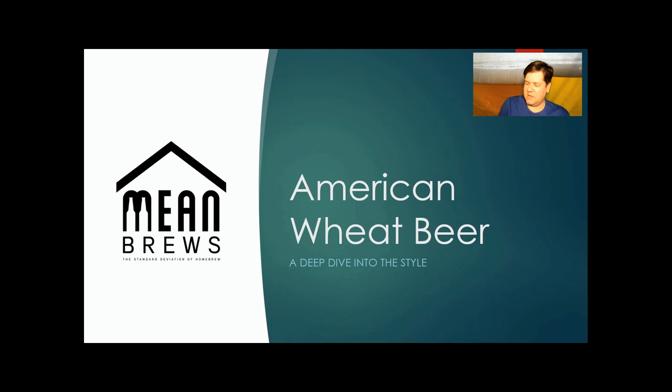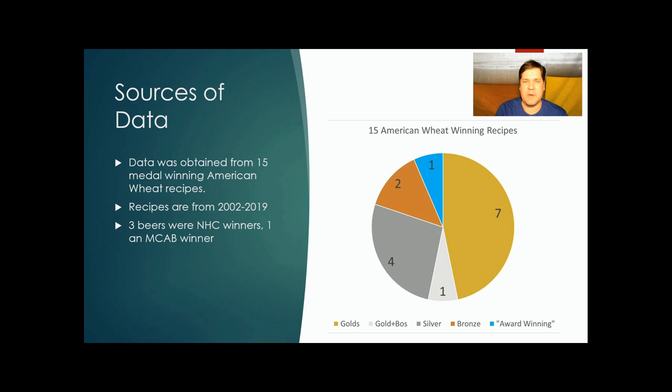The number of recipes we had for American wheat beer was only 15 recipes. The dates ranged from 2002 to 2019. Three of the beers were NHC winners, and we had one MCAB winner, Master Championship of American Brewers. More than 50% of the beers were gold medal beers.